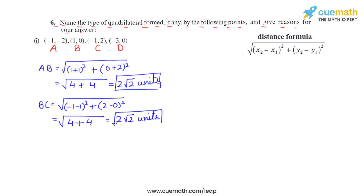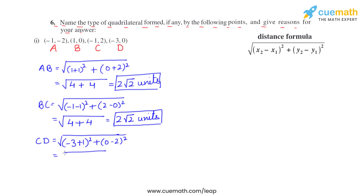Now let's find CD: (−3 minus −1) whole square plus (0 minus 2) whole square = (−2)² + (−2)² = 4 + 4 = 8. So CD = square root of 8 = 2√2 units.